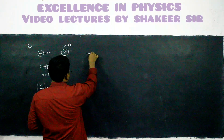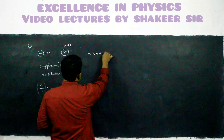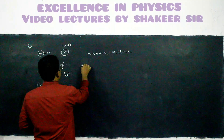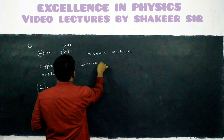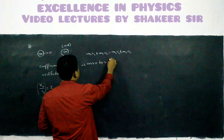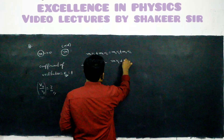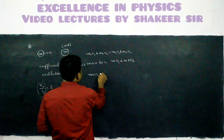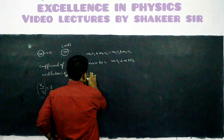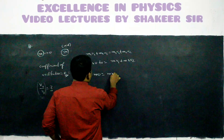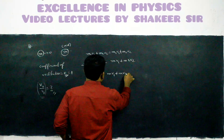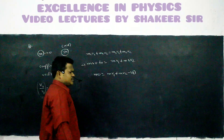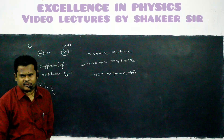Momentum is always conserved. So M1U1 plus M2U2 equals M1V1 plus M2V2. So M into U plus 0 equals M into V1 plus M into V2. So M into U equals MV1 plus MV2. Let it be my equation number 1 — by using law of conservation of momentum.